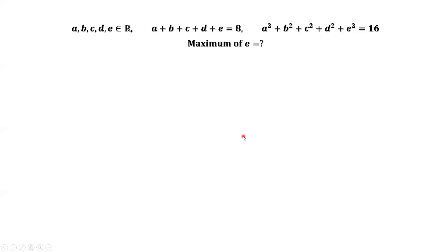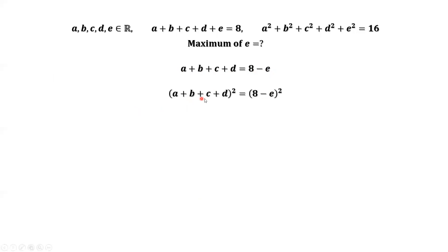From the first given condition, we have A plus B plus C plus D equals 8 minus E. If we square both sides, we have A plus B plus C plus D squared equals 8 minus E squared. From the second given condition, we have A squared plus B squared plus C squared plus D squared equals 16 minus E squared.